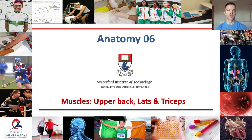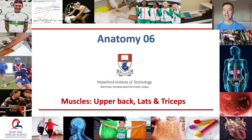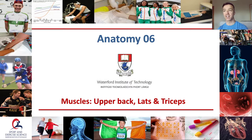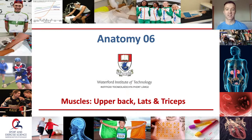How you doing everyone? Welcome to Anatomy 6. Today we are going to talk about antagonistic pairs of muscles and then we're going to take a look at the muscles of the upper back, the lats and the triceps. This is following on, building upon the information that we've covered in Anatomy 1 through 5, so please make sure that you're familiar with all of that content before you dive into this content here today.